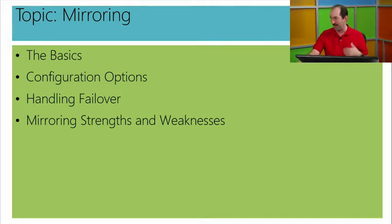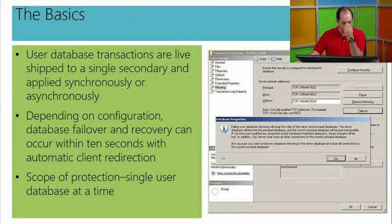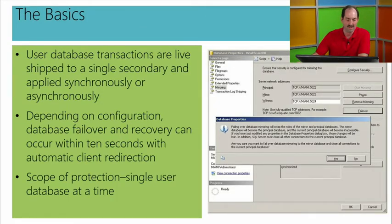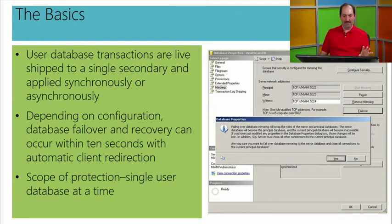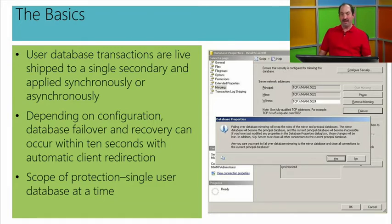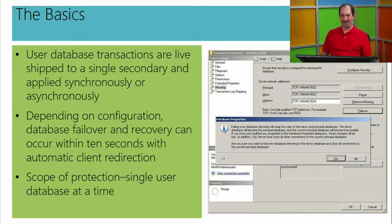Same general pattern: what are the basics, how do I set it up, strengths and weaknesses. I have one instance — we'll call it the principal instance — and it's serving a production copy of the database. With the newer .NET connection string technology, you could have not only a primary connection string but an alternate server name in the connection string, and this is part of the automatic client failover. I have to have a recovery model — you would only set it up in full recovery model.